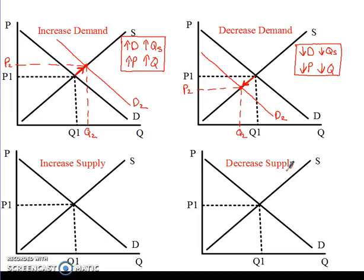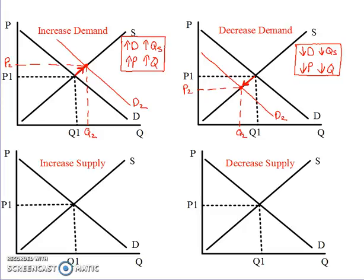These are the other two things that can happen when one curve shifts. We looked at what happened when a demand curve shifts right and when a demand curve shifts left. Now let's look at what happens when we get an increase in supply. Remember: supply means the curve is shifting, and increase means it's going to the right. Increase means right, decrease means left. So increased supply means the supply curve shifts to the right — that's the mechanics of it.